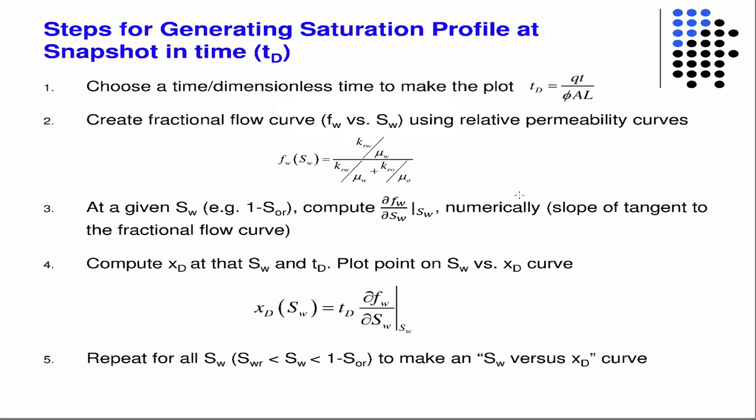So just to rehash how you get the saturation profile: you choose the dimensionless time, you create the fractional flow curve from the relative permeability data, then you compute this derivative numerically. If you have a curve, you can interpolate it into a function and then take the derivative of that function.